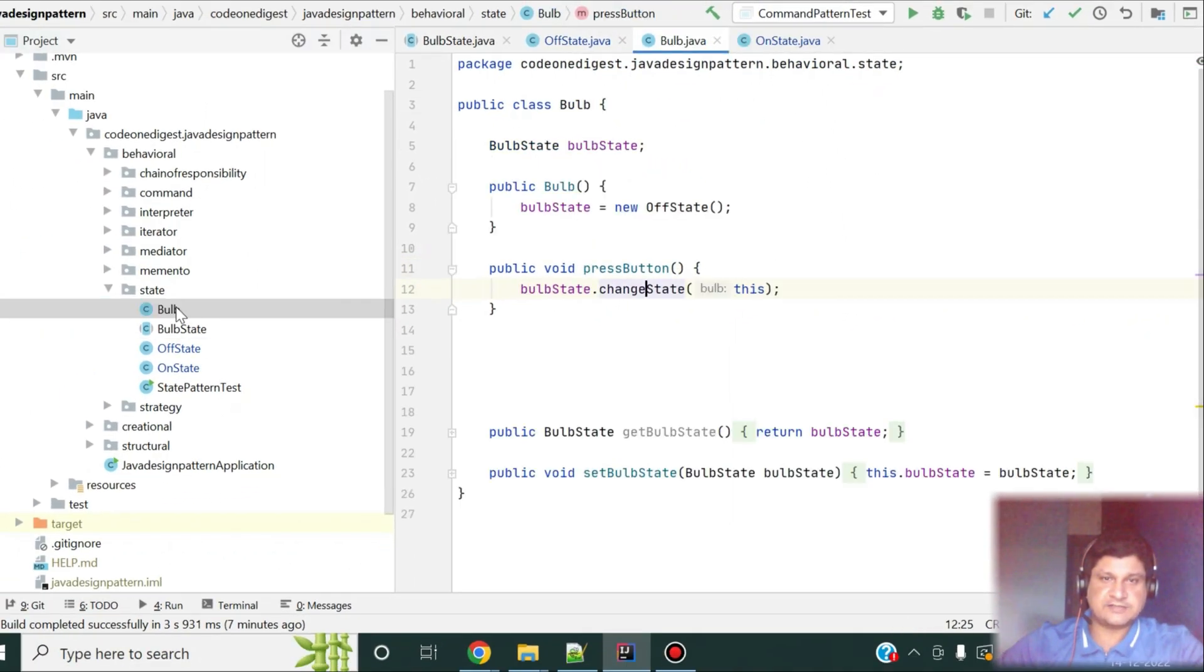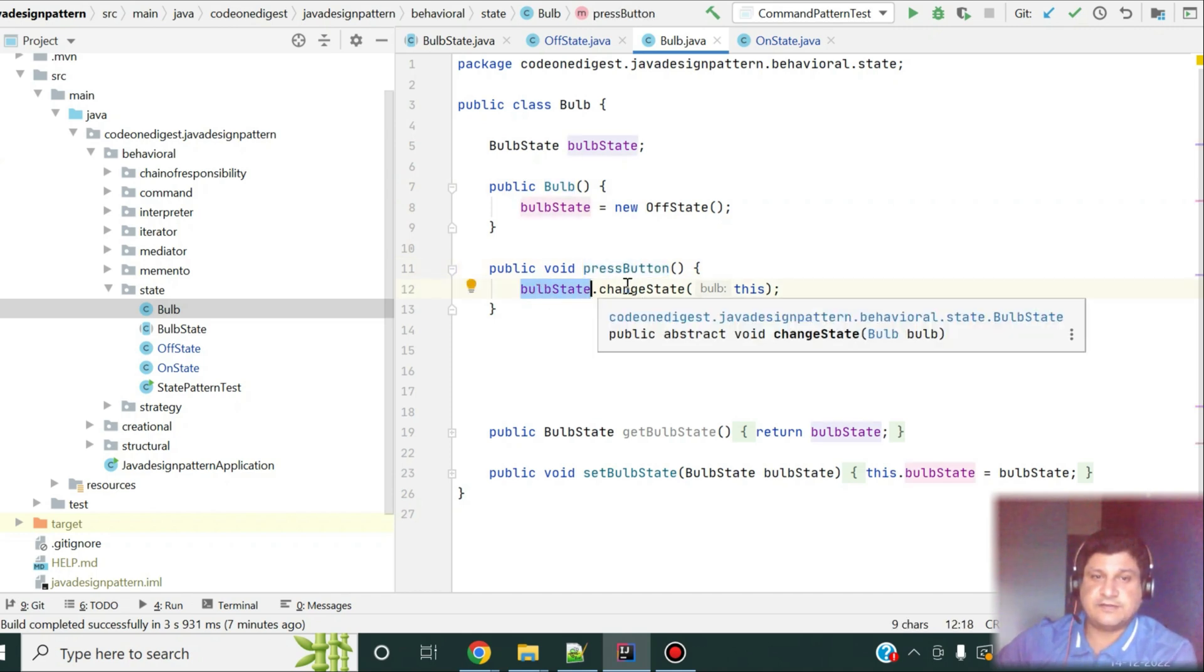Now, let me show you what is my context. That is my bulb object. So, in the bulb object, I am having an instance of my state. Because this is my context. It is having a state object here. So, instead of having the state code directly inside a bulb, I am having that in a bulb state. And that object, I am using it here as a composition. Now, whenever this object changes, then the behavior of my bulb changes. So, I have a constructor of a bulb. Then, I have a press button. Whenever I am pressing this button, the state of bulb is changing. That means, I am calling the change state method of this state object. With me?